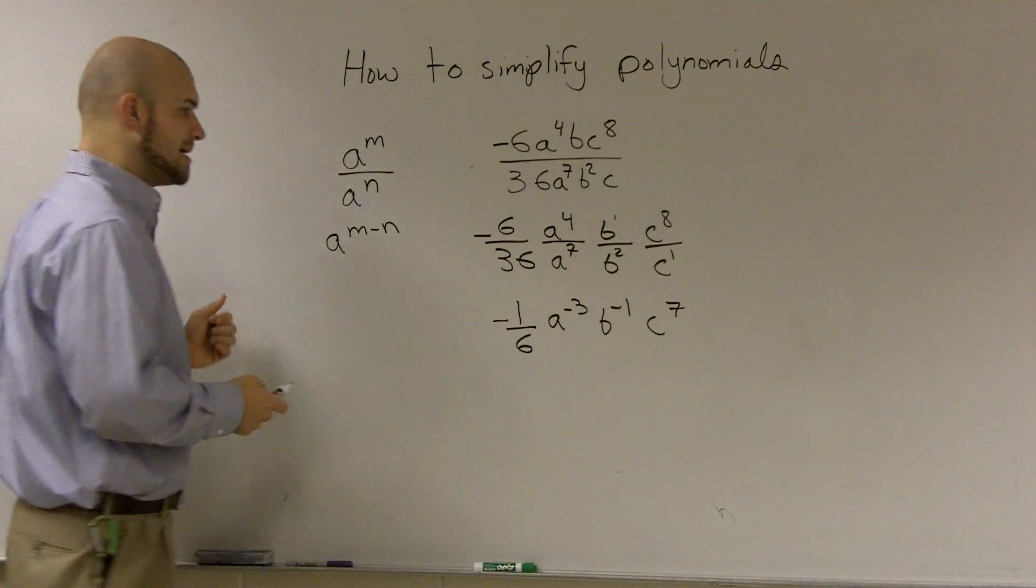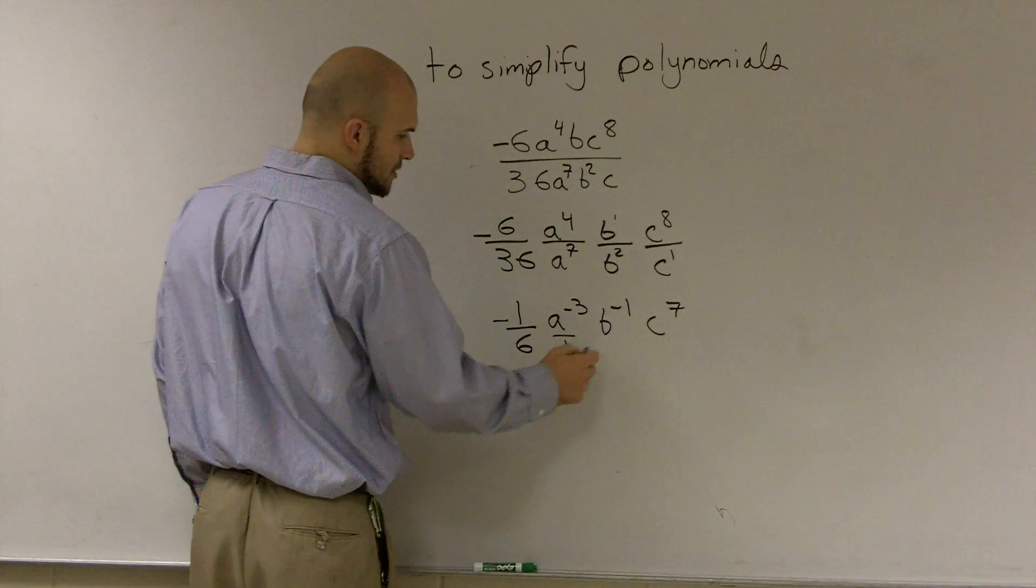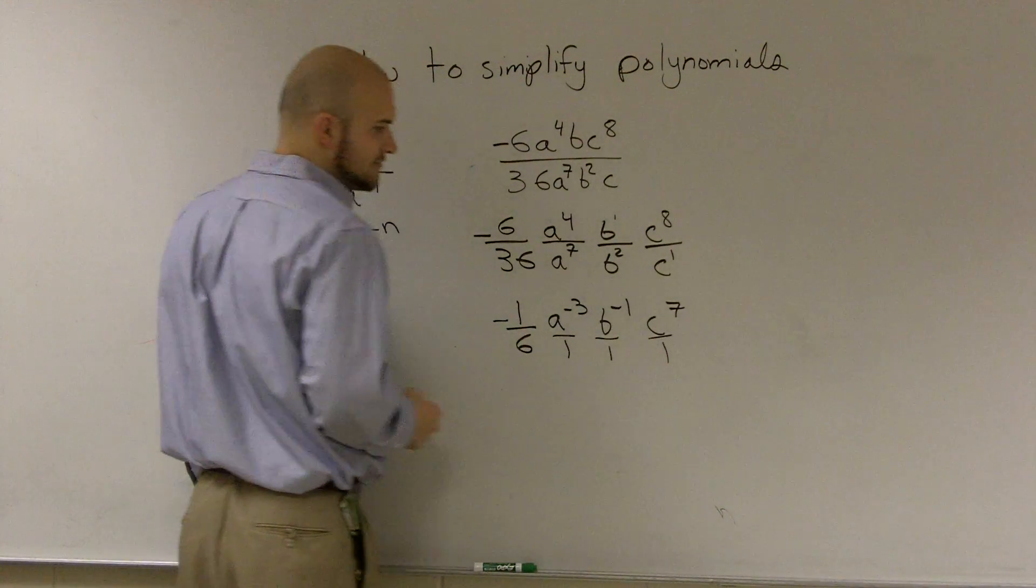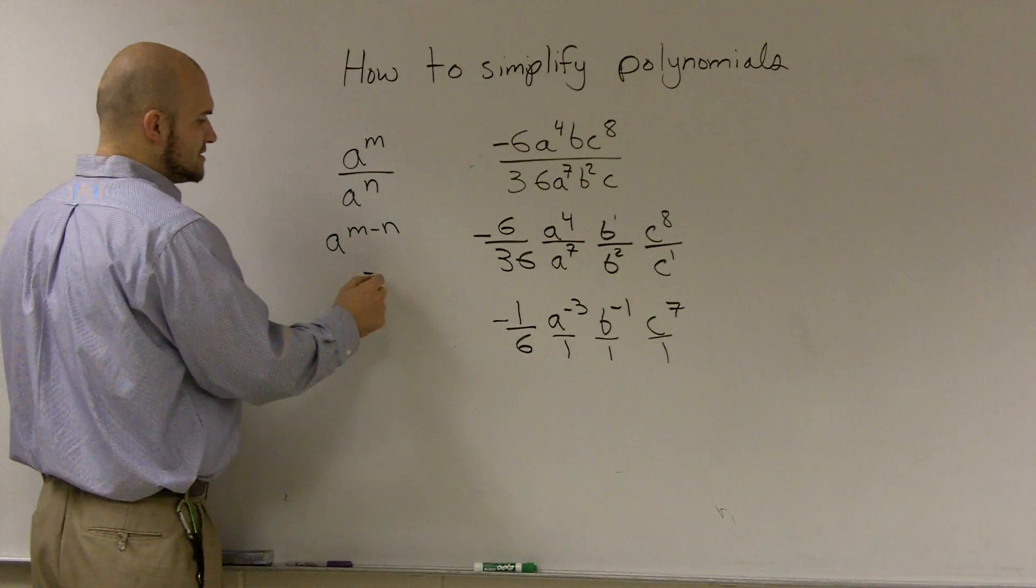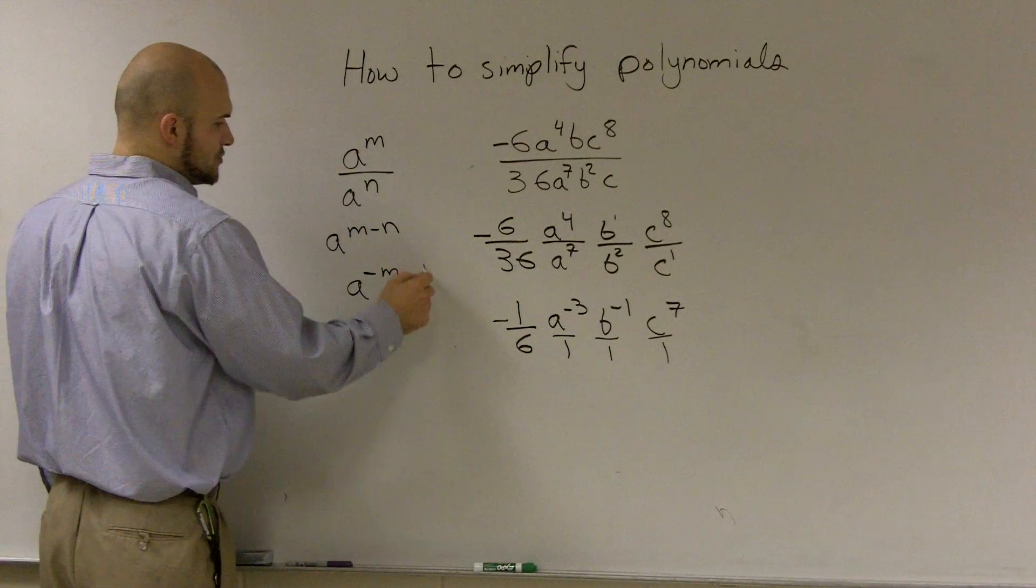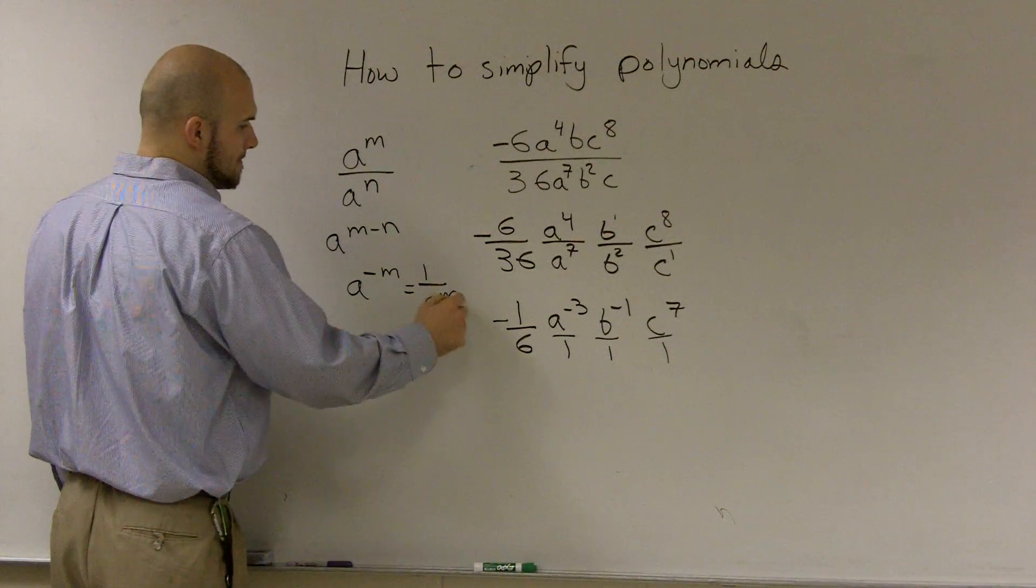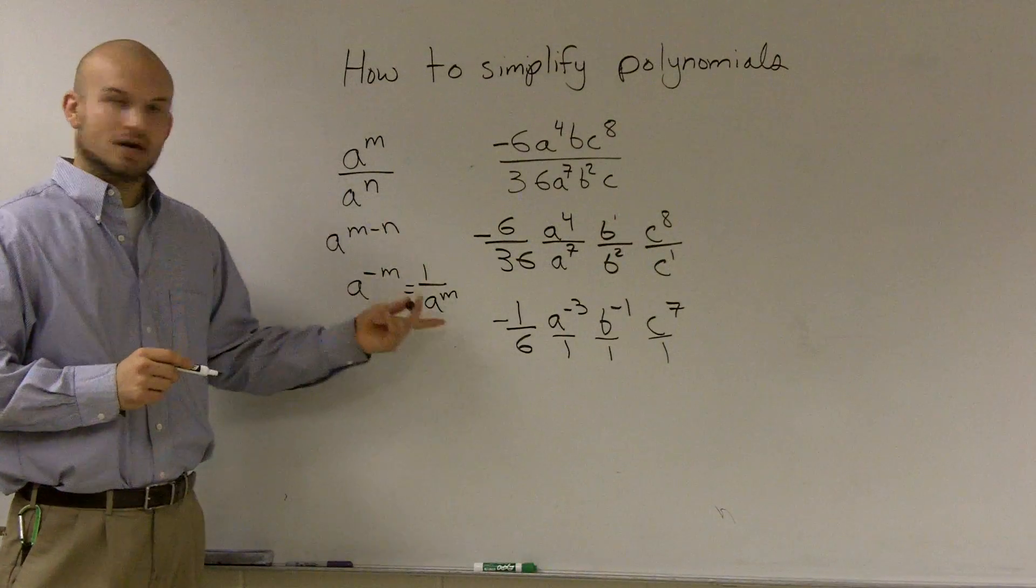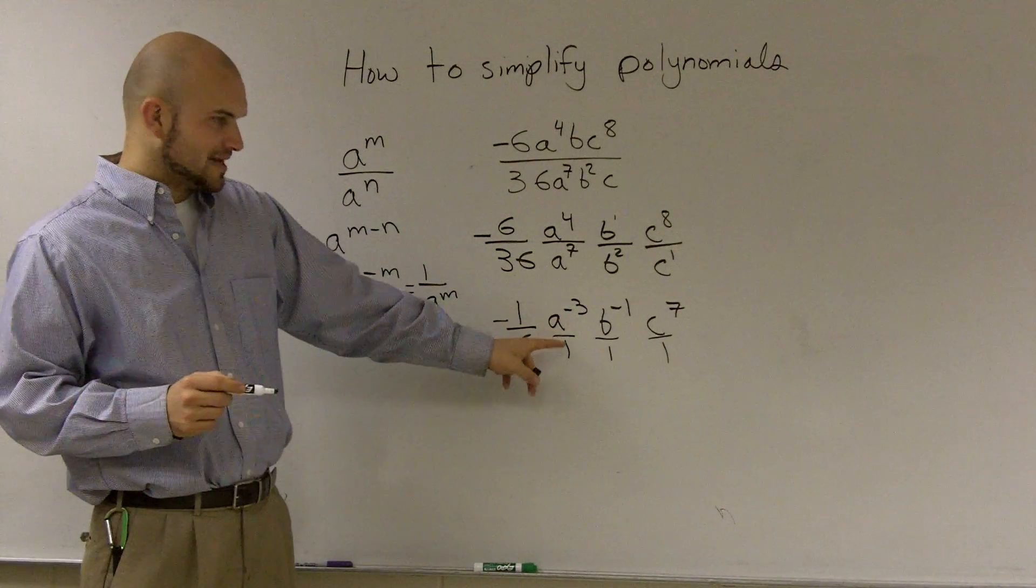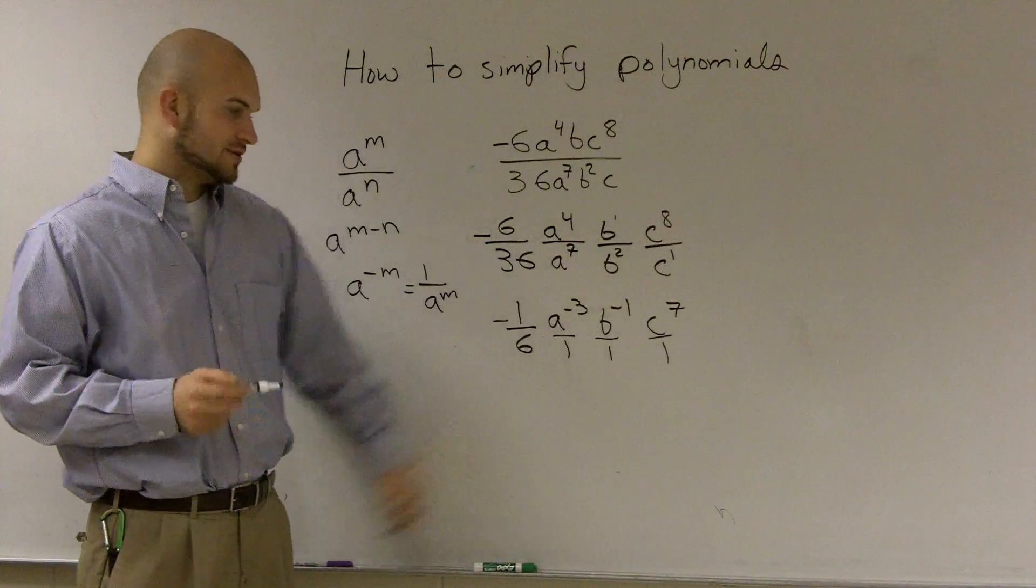Now, the next law that I need to remember, and you can always say that these are always over 1 if you want to maintain your fractions. The next law I need to remember is a to the negative m is equivalent to 1 over a to the m. So when I have a negative exponent, that's actually under 1. So what I'm going to have to do is invert both of these and they're going to be on the bottom.